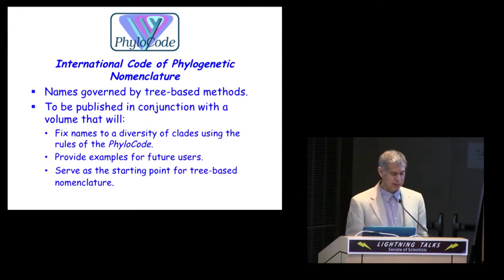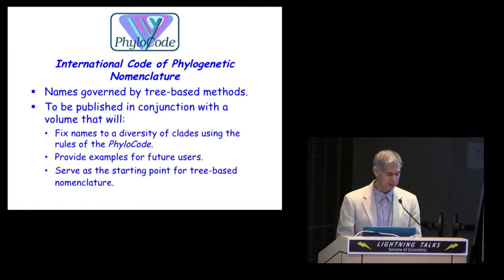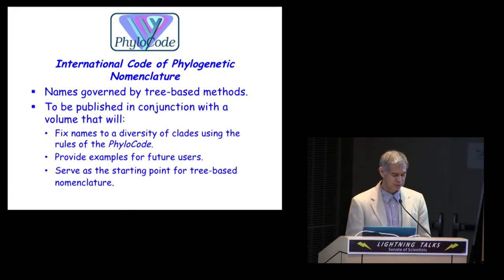Because of these advantages, several colleagues and I have drafted a tree-based alternative to the traditional rank-based codes. Its official name is the International Code of Phylogenetic Nomenclature, though it's commonly referred to as the PhyloCode. It contains rules and recommendations about how names are to be defined and applied using tree-based methods. It's been accepted for publication, but publication is being delayed so that it can appear simultaneously with a volume that will fix names to a diversity of clades according to the rules of the PhyloCode, provide examples of how to define names for future users, and serve as the official starting point for tree-based approach to nomenclature. Thank you.